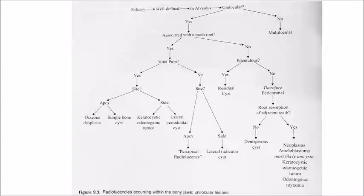If the unilocular radiolucency is not associated with the tooth root and is in an edentulous region, it can be a residual cyst. If it is in the coronal region, then it is a pericoronal lesion. If the pericoronal lesion causes root resorption of adjacent teeth, it can be neoplasms like ameloblastoma, keratocystic odontogenic tumor, or odontogenic myxoma. If no resorption, then it will be a dentigerous cyst.